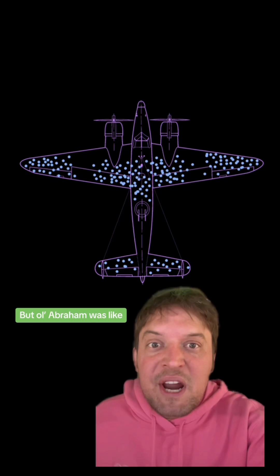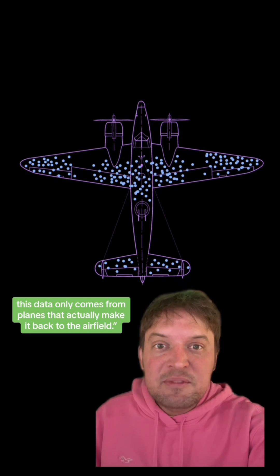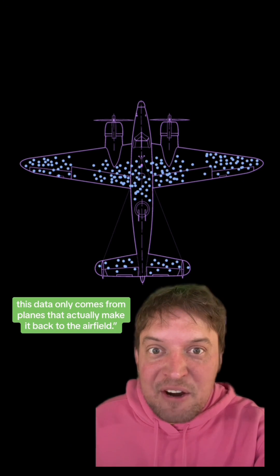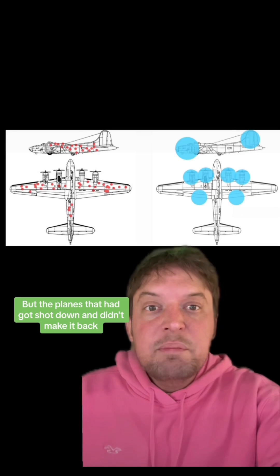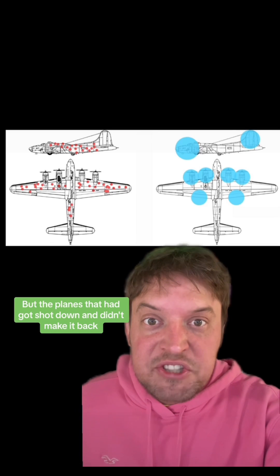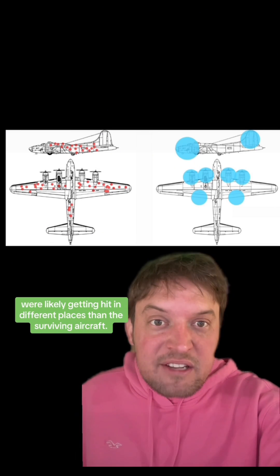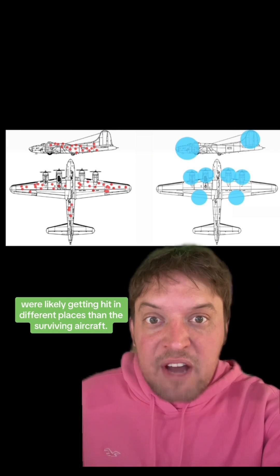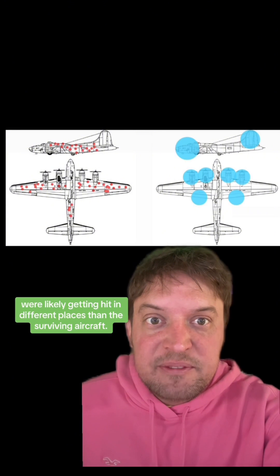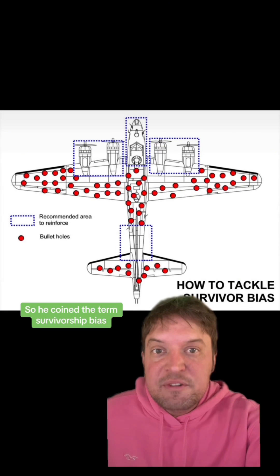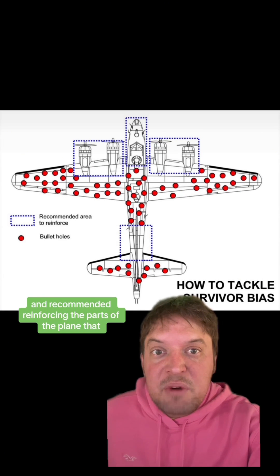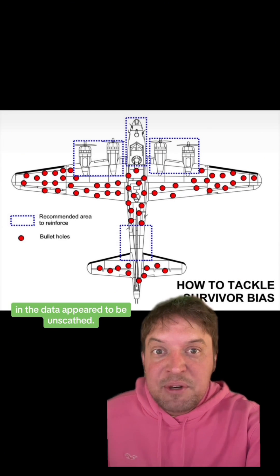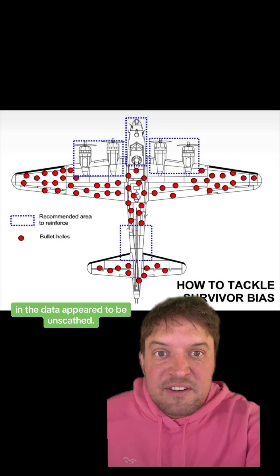But Abraham was like, wait — this data only comes from planes that actually make it back to the airfield. So the planes that got shot down and didn't make it back were likely getting hit in different places than the surviving aircraft. So he coined the term survivorship bias and recommended reinforcing the parts of the plane that in the data appeared to be unscathed.